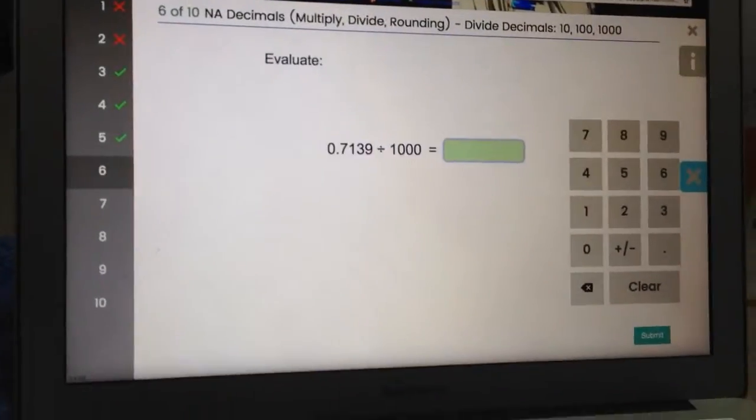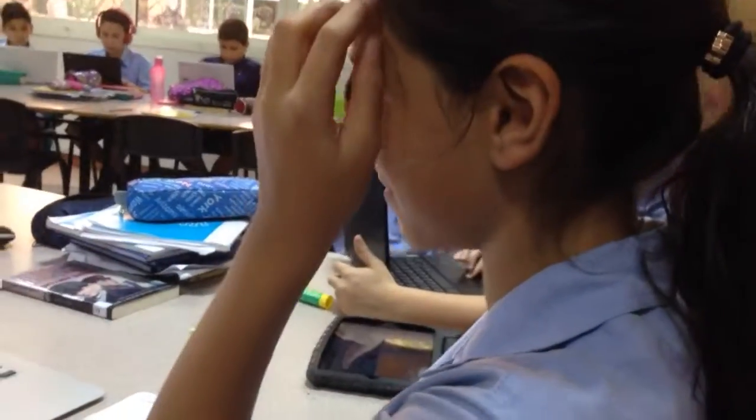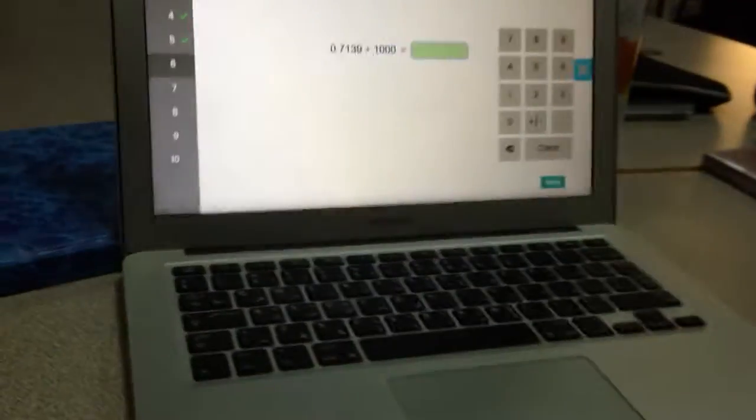0.7139 divided by 1000. What are you going to do to try and work this one out? This is very hard. I don't really know. How about we write it down on the whiteboard here first, under each other?